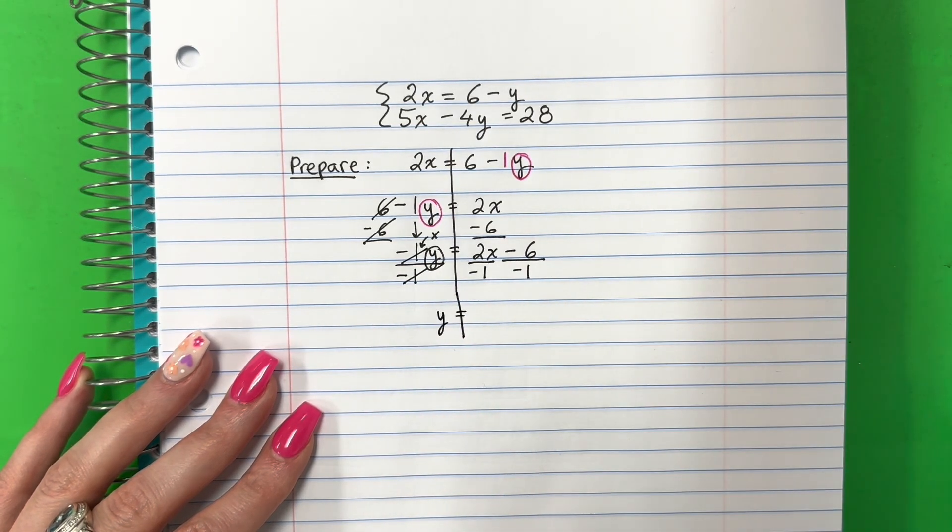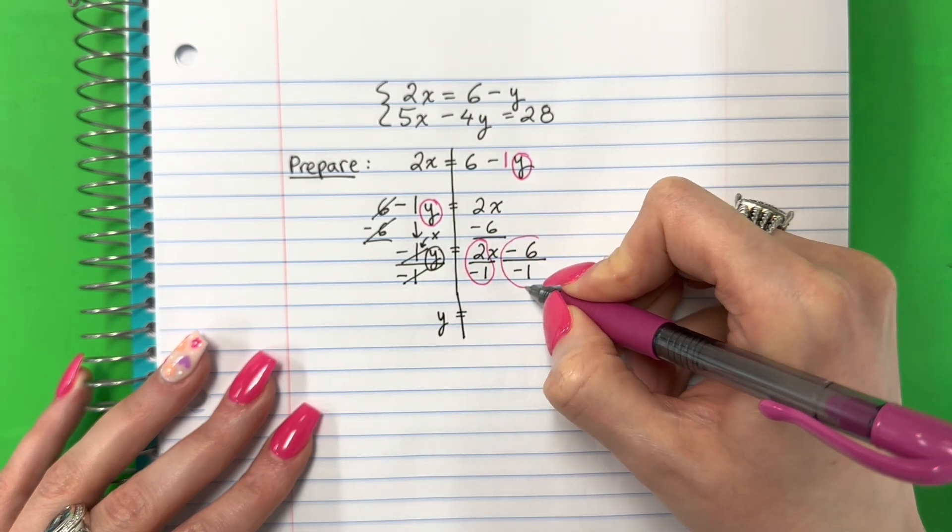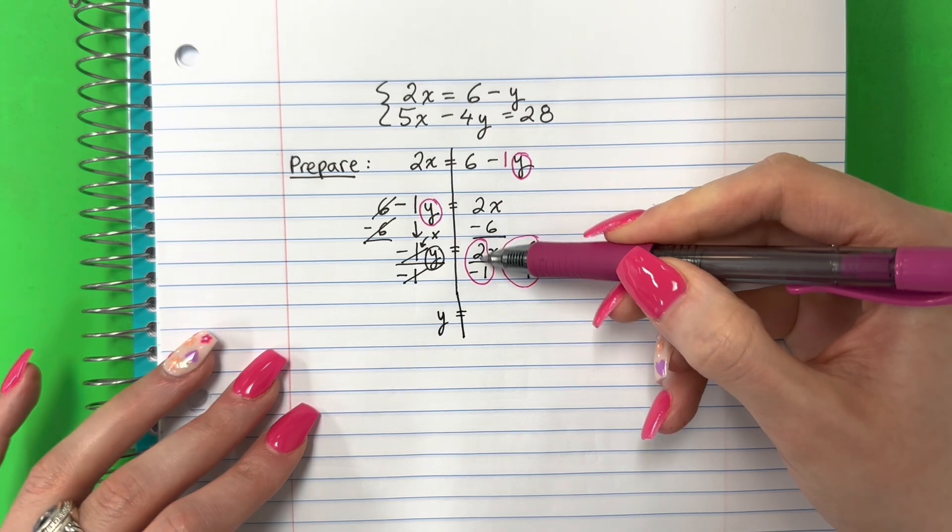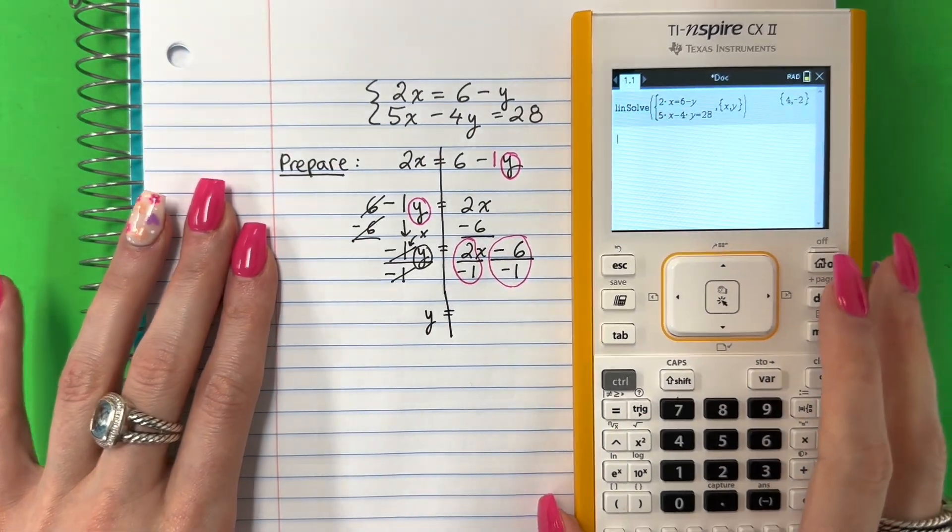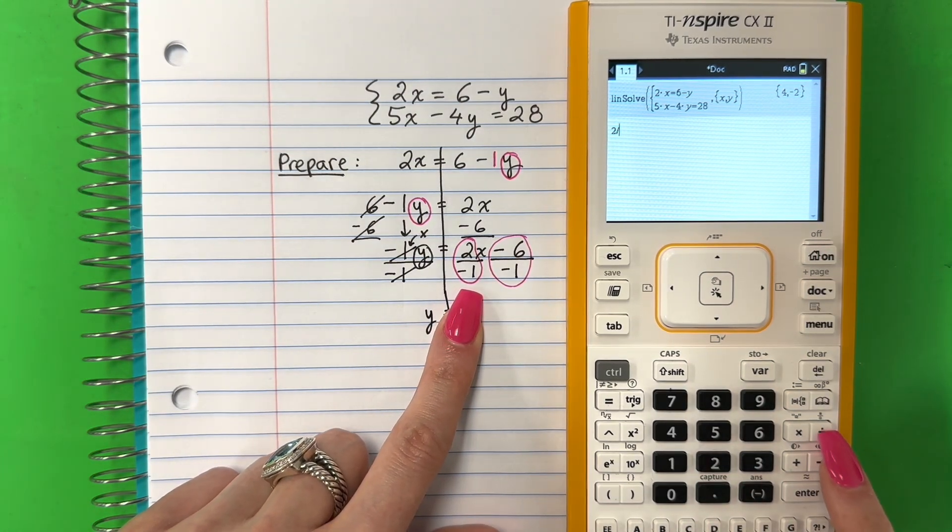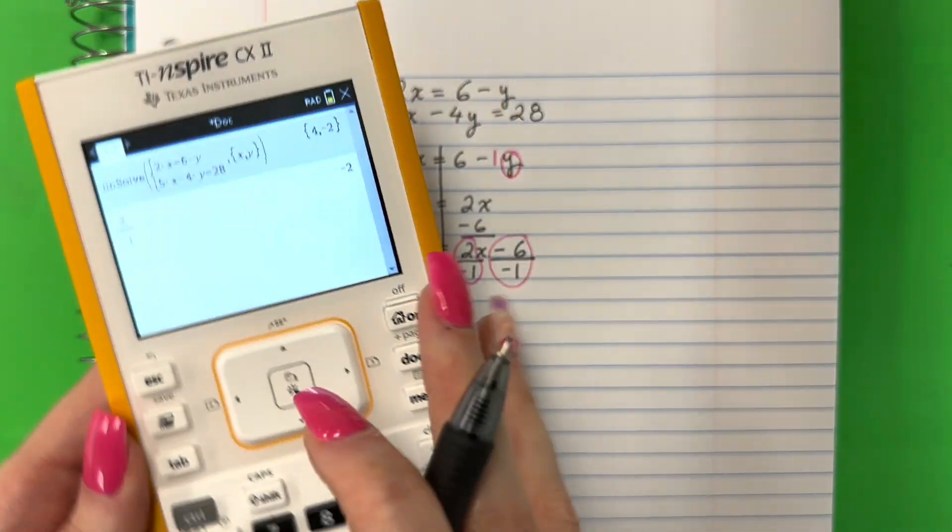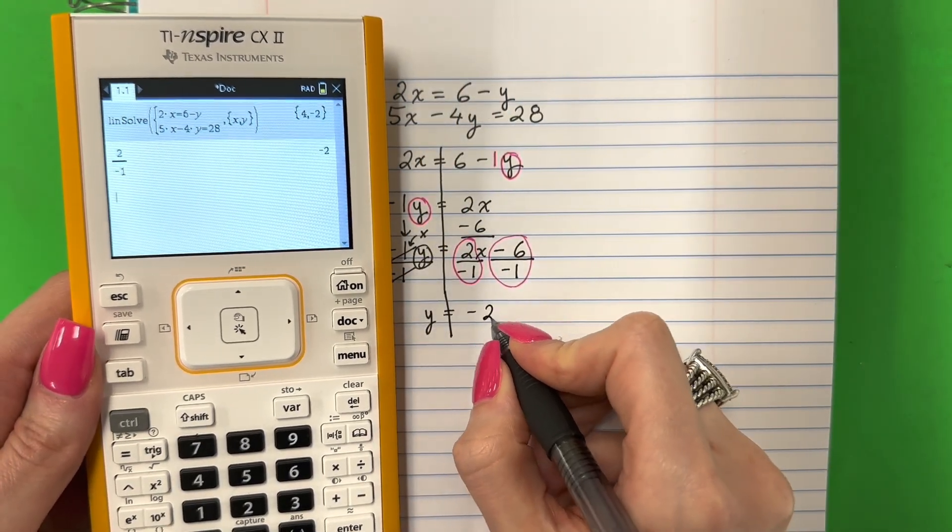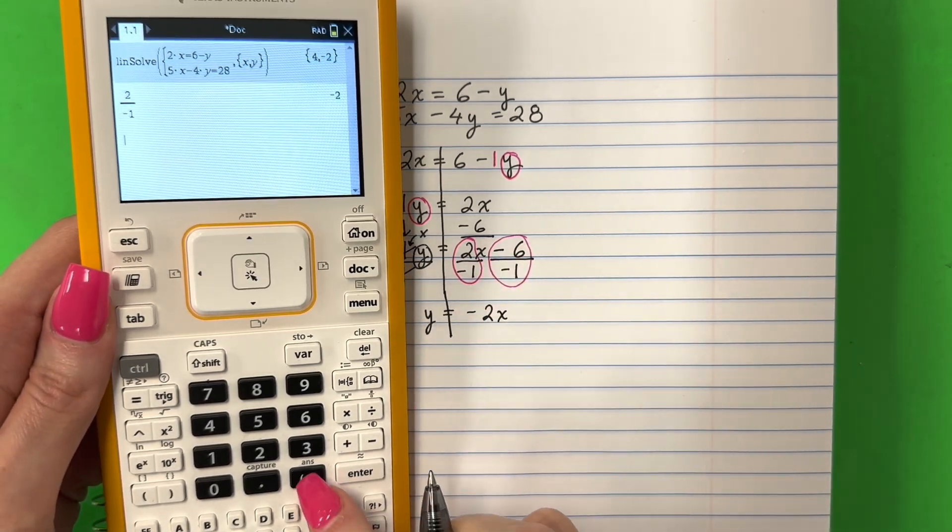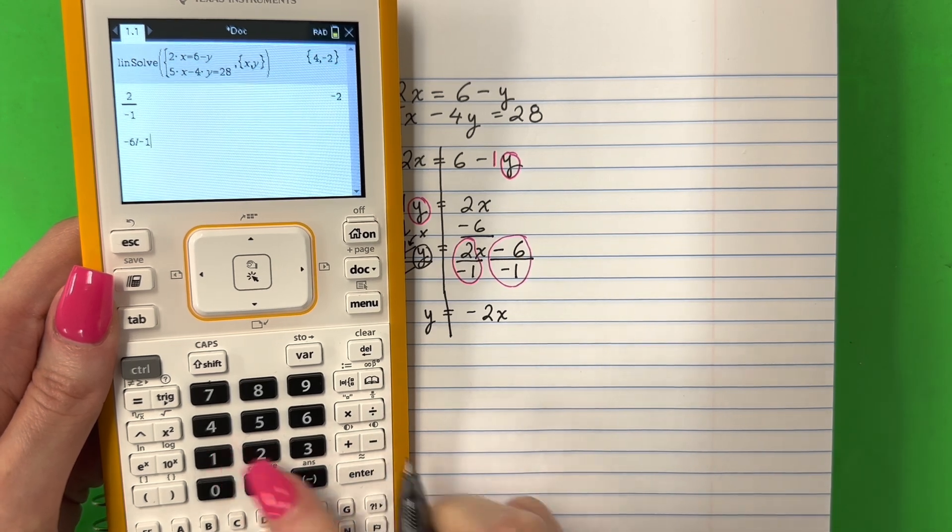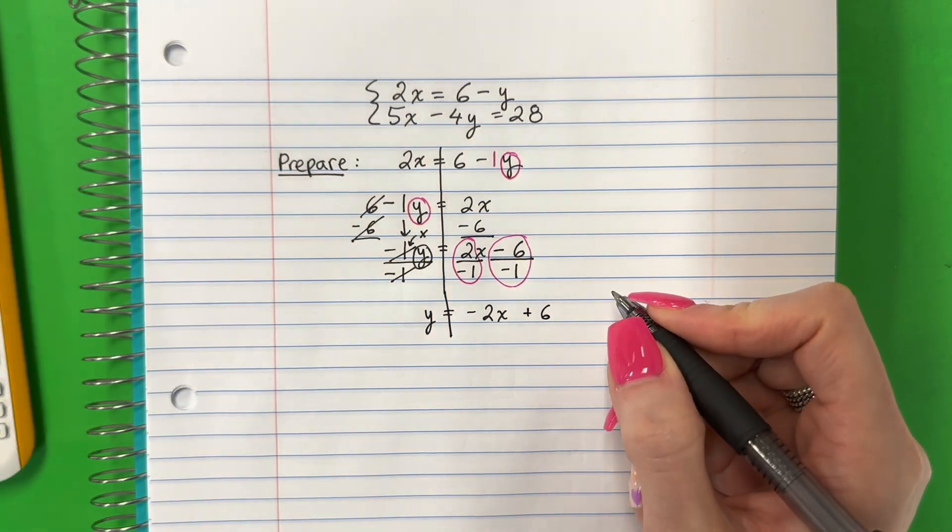Please don't put plus 1 here. Por favor, no pon más 1 aquí. The opposite of multiply is divide. El opuesto de multiplicación es división. Divided by the number with Y is negative 1. El número con Y es negativo 1. Copy for each part. Copy a cada parte. Divided by negative 1. Negative 1 divided by negative 1 is 1. Cancel. Negativo 1 entre negativo 1 es 1. Se cancelan. Y equals. We're going to put in the calculator 2 divided by negative 1 and negative 6 divided by negative 1. Vamos a poner estos dos en la calculadora.